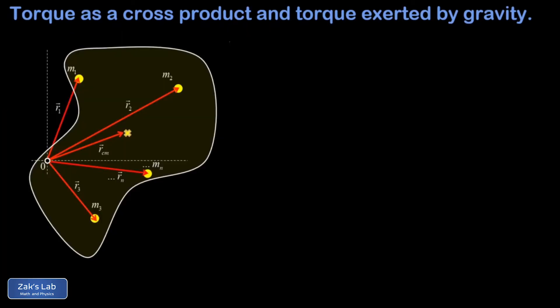Now that we have torque defined as a cross product, we can compute the torque exerted by gravity on a rigid body. In this diagram I have some rigid body broken into point masses m1, m2, m3, all the way to mn. I've also labeled the center of mass of this rigid body.